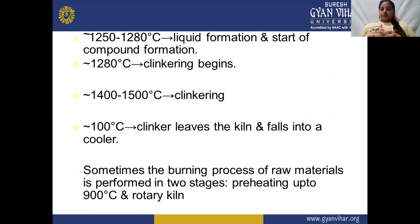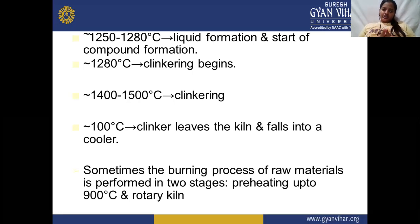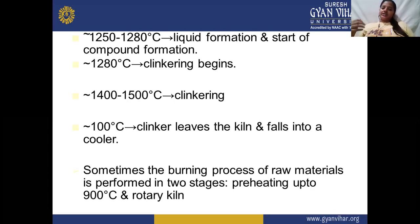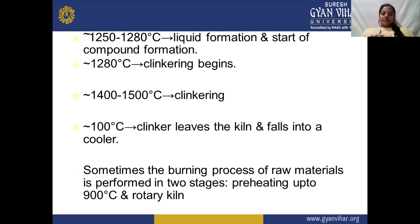At 1260 to 1280°C, liquid formation and start of compound formation — the Bogue compounds start to form. After 1280°C, clinkering begins. Complete clinkering takes place at 1400 to 1500°C. The temperature is then reduced to 100°C where the clinkers leave the kiln and fall into a cooler responsible for cooling and storing them. Sometimes the burning process is performed in two stages: preheating up to 900°C, then the rotary kiln.